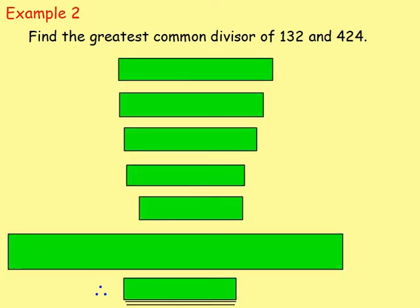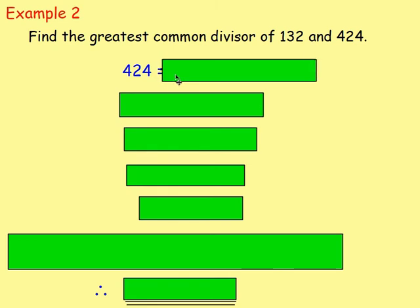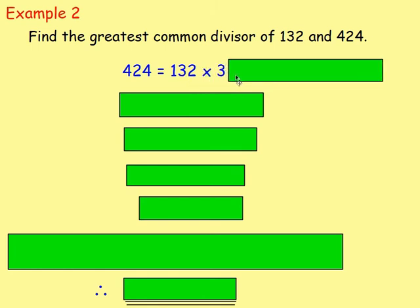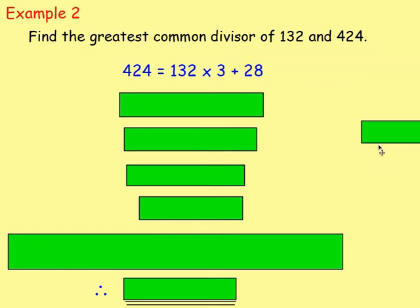Example 2: find the greatest common divisor of 132 and 424. Start by taking the larger number, 424, and expressing it in terms of the smaller number, 132. How many 132s are in 424? Dividing gives 3 point something, so it fits 3 times. 132 times 3 gives 396, so 424 equals 132 times 3 plus 28.